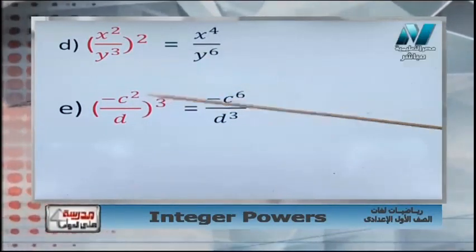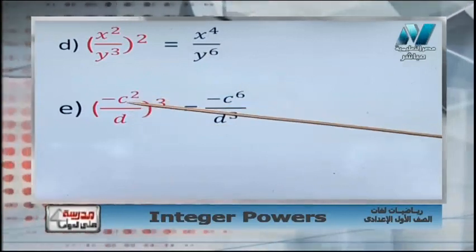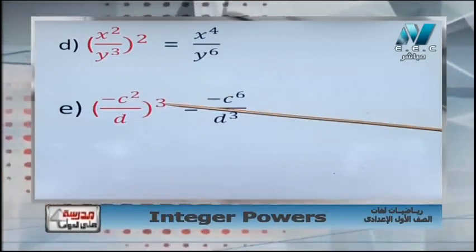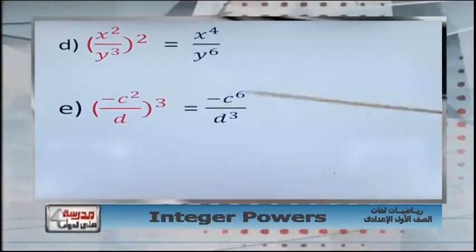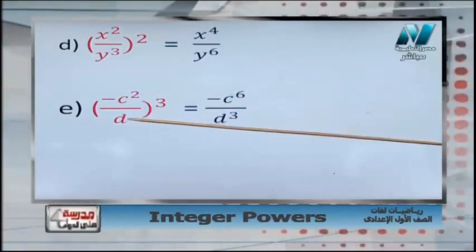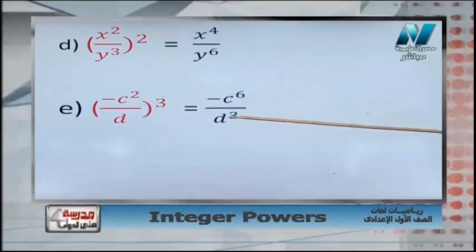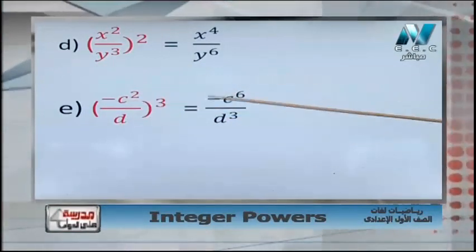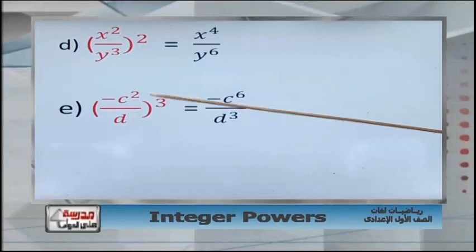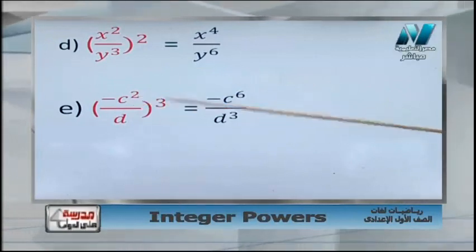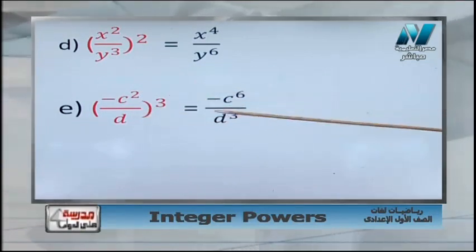Distribute the power 3 over c power 2 and over g. For c power 2, all power 3: power of the power, 2 times 3 equals 6. For g — g has power 1 — 1 times 3 equals 3. So the negative sign stays as it is because we have an odd power. The result is negative c power 6 over g power 3.